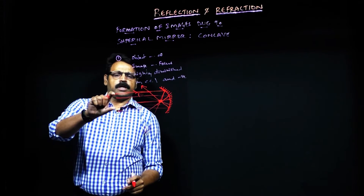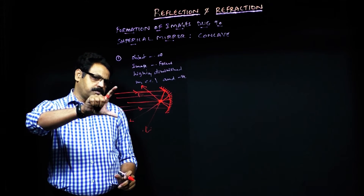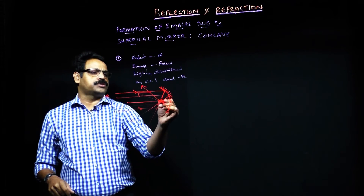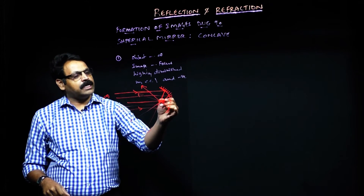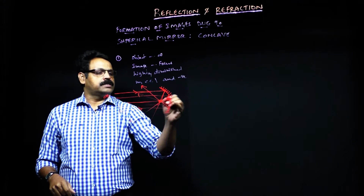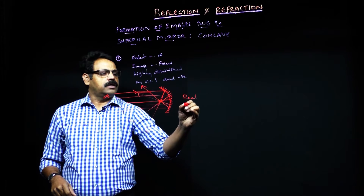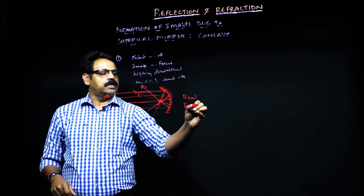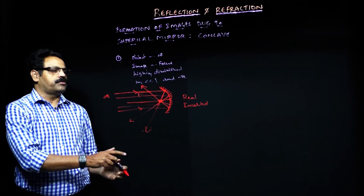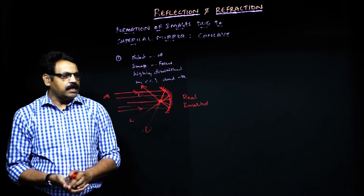So here, at infinity the object has a greater size, but when it comes to the focus it is highly diminished. One more thing is the image formed is real and inverted. These are the properties of the image when the object is at infinity.